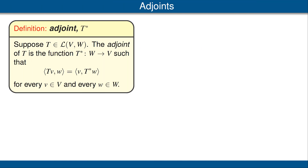Suppose T is a linear map from V to W. The adjoint of T will be a function denoted T star going in the other direction from W to V. Here's how we define T star. Fix a vector W in our vector space W. Look at the linear map on V that sends a vector V to T of V inner product W. In other words, W is fixed, and we're looking at the linear functional that sends V to the left side of the equation that you can see here.